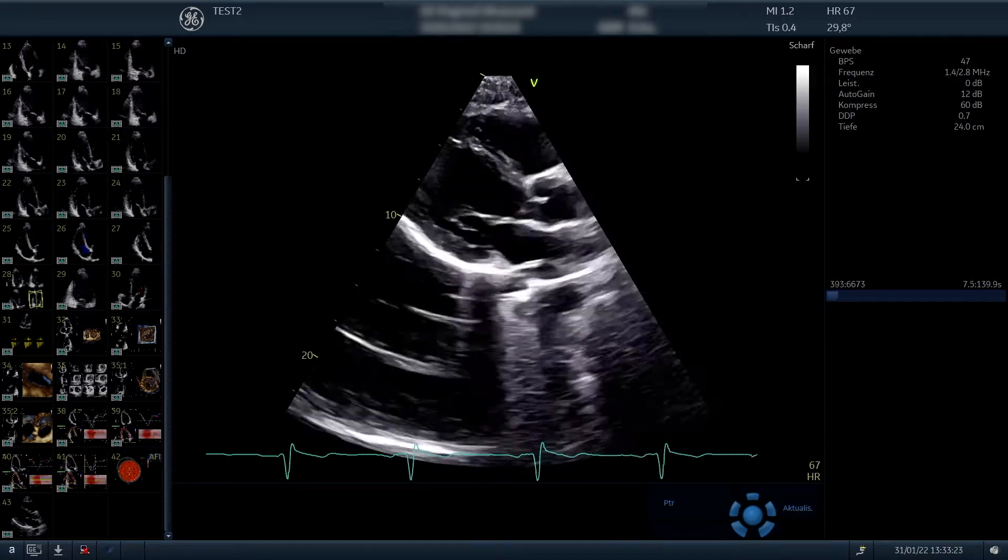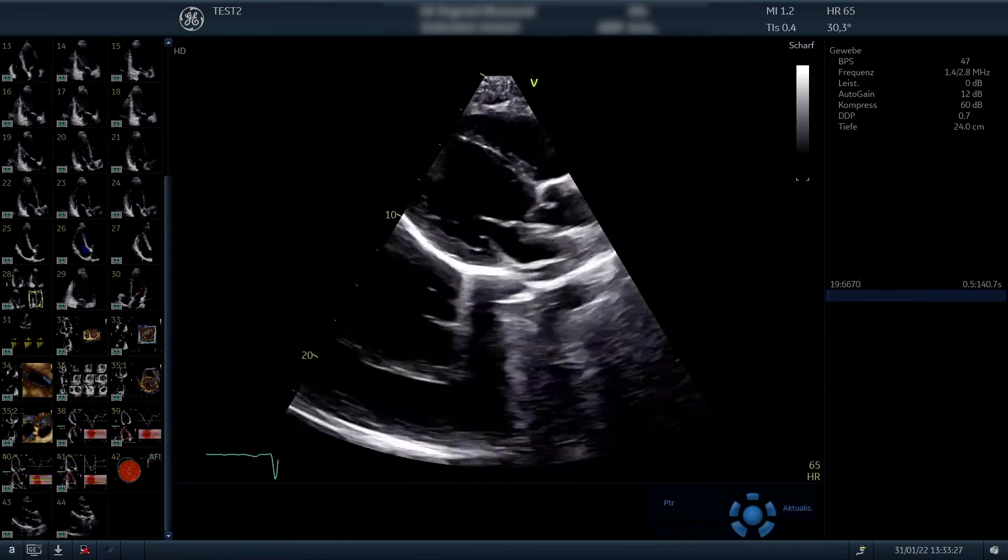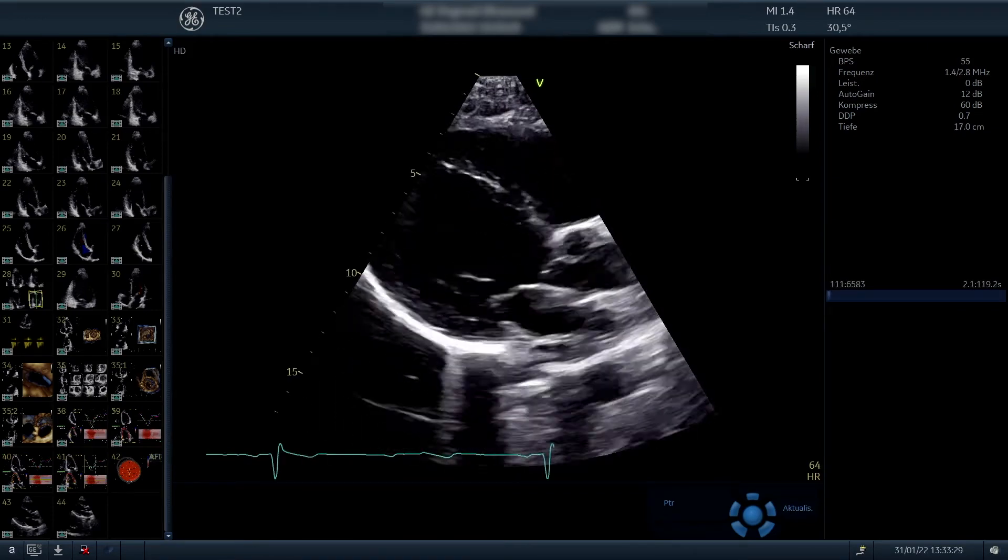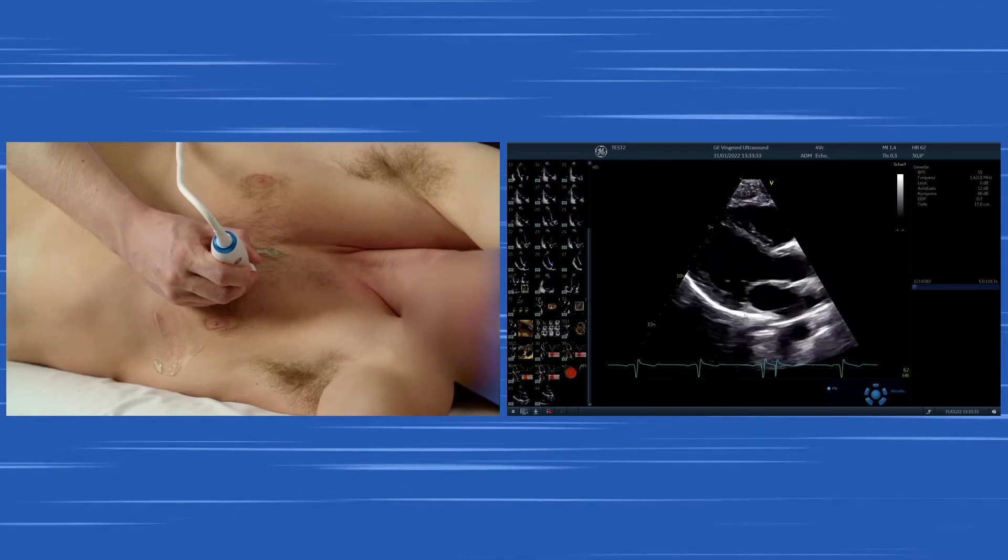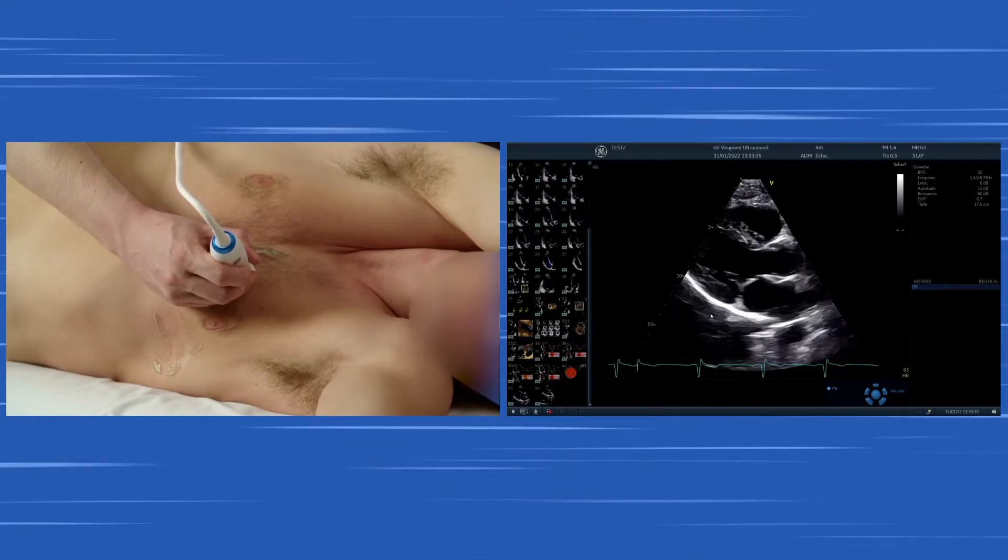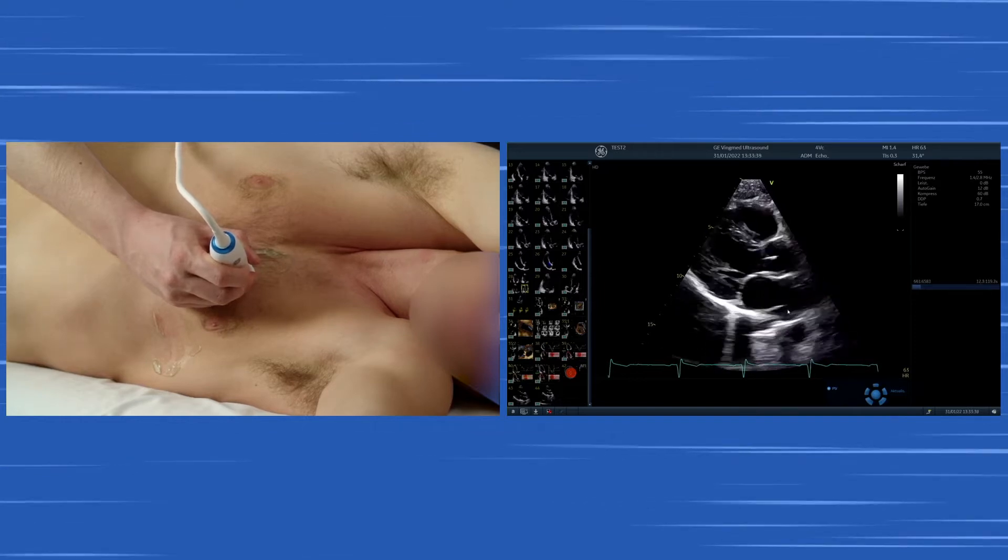We see the parasternal long axis view and below we have a little bit of space where we can differentiate pericardial effusion. Then we go a little bit more towards the anatomical structures. That was just the descending aorta, that's the pericardium, and in this area we would see pericardial effusion or below pleural effusion.